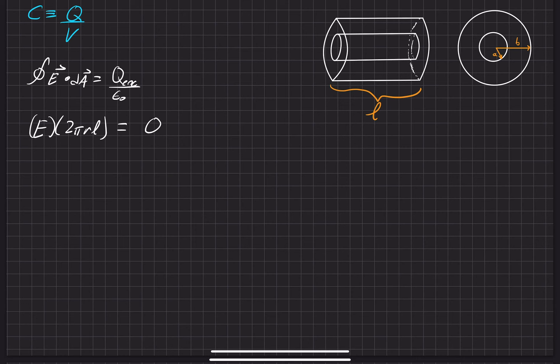That's equal to Q over epsilon naught. Then we'll solve for that electric field. We'll turn this whole thing into an r-hat, because that is actually in the r-hat direction. So we can add that r-hat back onto the end there.